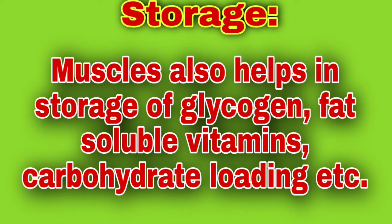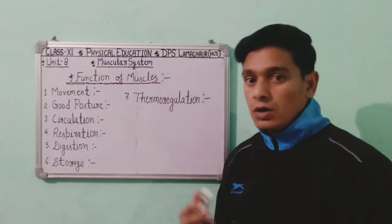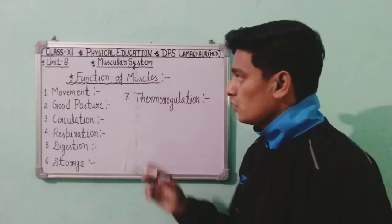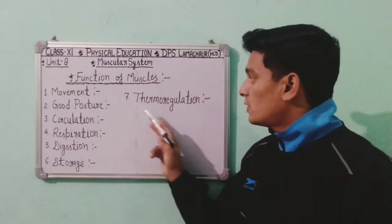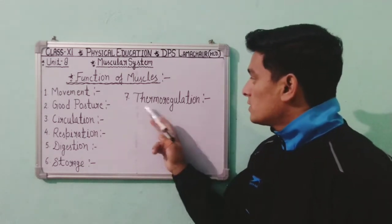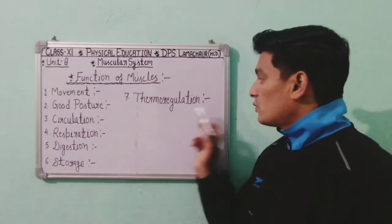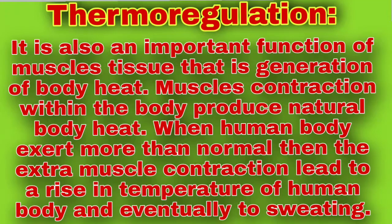The sixth function is storage. Muscles also help in the storage of glucose, glycogen, fat-soluble vitamins, carbohydrates, and so on. Muscles also work as a storehouse.